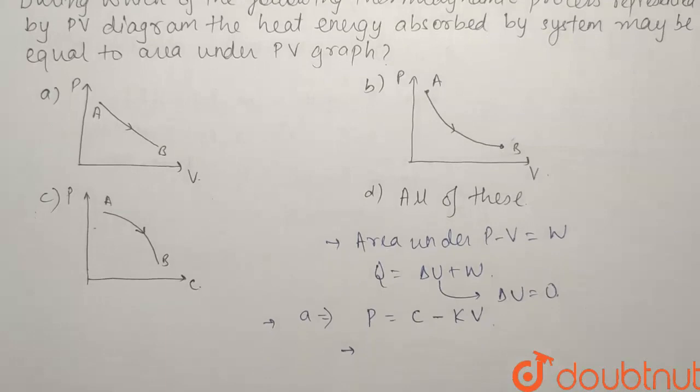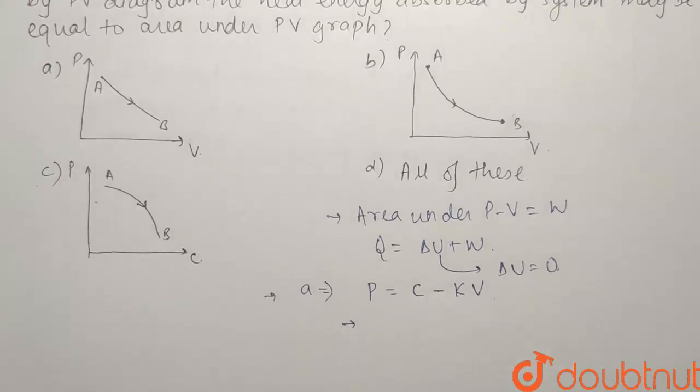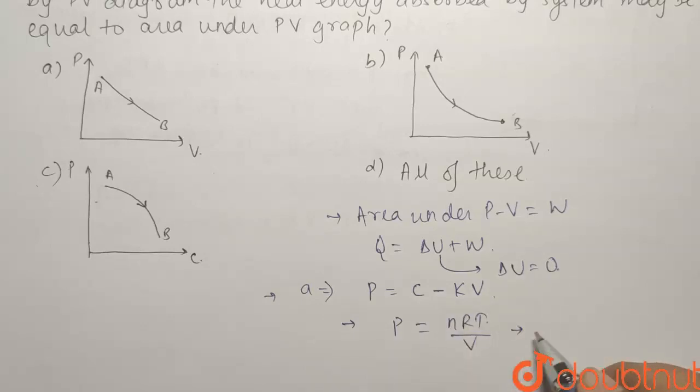I have to make delta U equals to 0, that is the temperature has to remain constant. For isothermal process, P will be equals to NRT by V where NRT is a constant. So the pressure is going to be inversely proportional to volume.